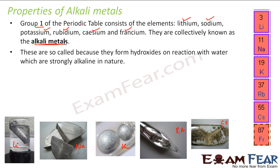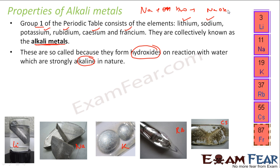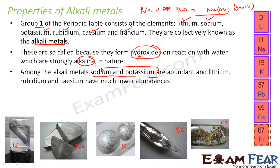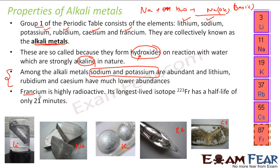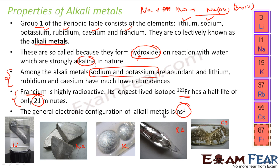And why are they called alkali metals? It is because they form hydroxides on reaction with water and they are strongly alkaline in nature. For example, sodium reacted with H₂O will form NaOH, and these hydroxides are very alkaline, very basic in nature — not acidic, but basic — and that's why they are called alkali metals. Regarding abundance, sodium and potassium are the most abundant, and we will discuss this in a few slides. Francium is very, very radioactive; the longest-lived isotope, francium-223, has a half-life of only 21 minutes.